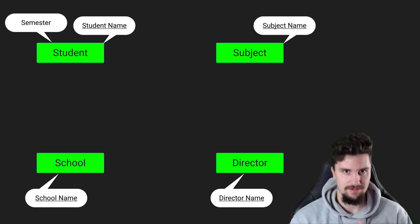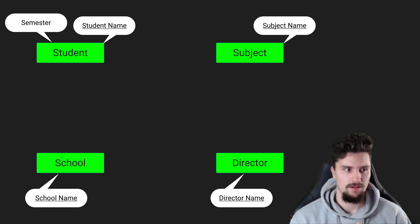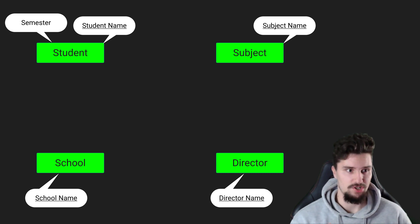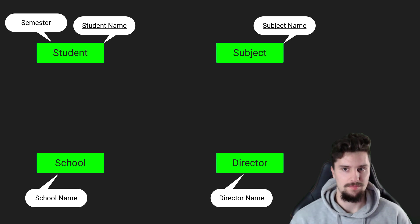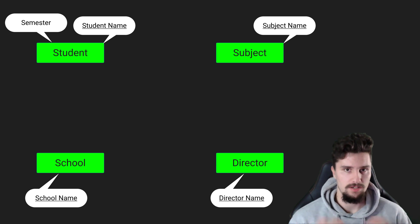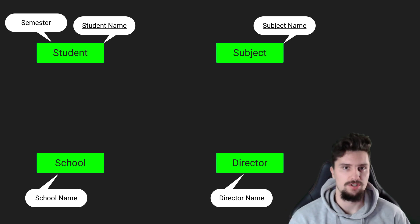Now we have our four tables, but we don't know how these tables are actually related to each other. We know all our students and all our subjects, but we don't know which students participate in which subjects. You could save a list of subjects in the student class and a list of students in the subject class, but that would be so much data — you would never do it this way. The whole point of relational databases is to define relations between our entities. There are three types of relations we can have: one-to-one, one-to-n, and n-to-m.